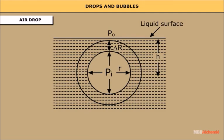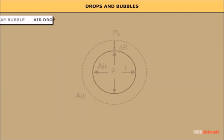In case of an air bubble surrounded by liquid (instead of a liquid drop surrounded by air), the excess pressure is: pi − p₀ = 2S/r + h·rho·g, which represents the excess pressure inside an air bubble at depth h from the liquid surface.